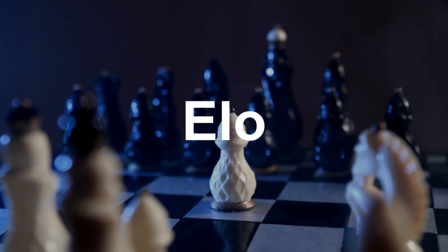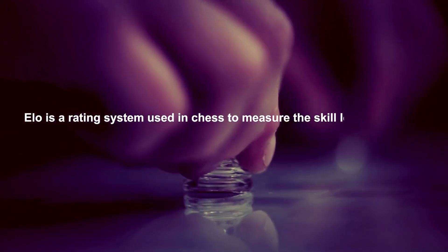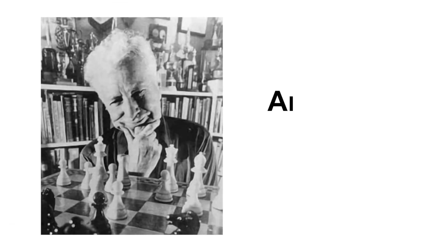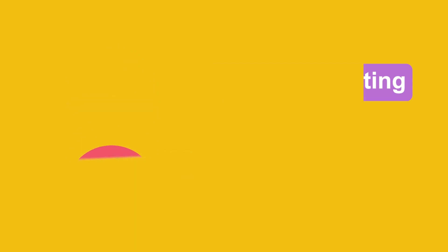What is an ELO in chess? ELO is a rating system used in chess to measure the skill levels of players. It was created by Arpad ELO, who was a Hungarian-American physics professor. Players are given a numerical rating based on their performance in games against other rated players.